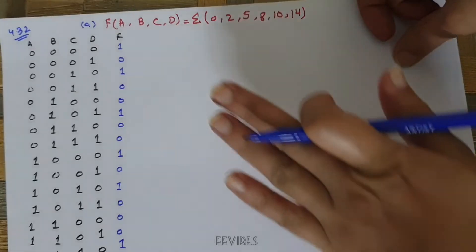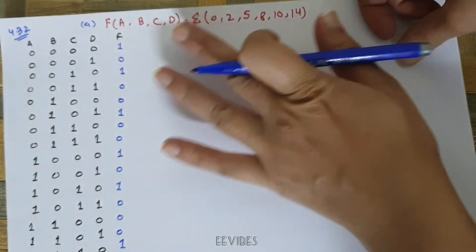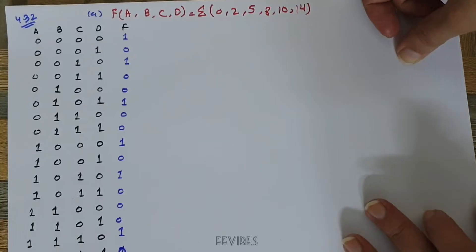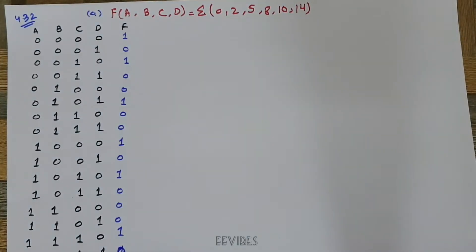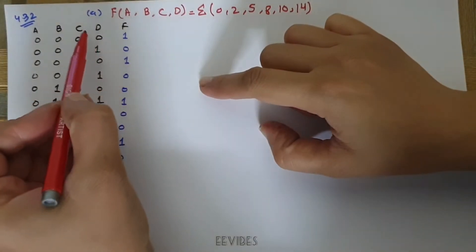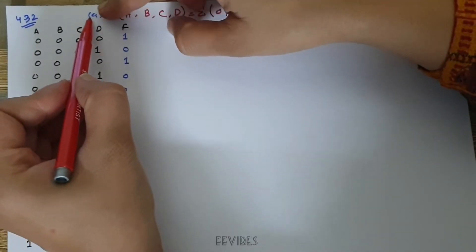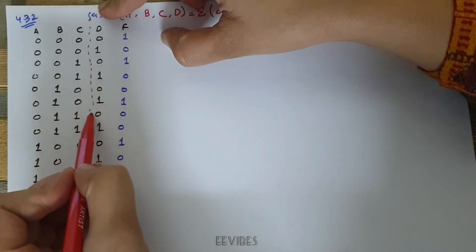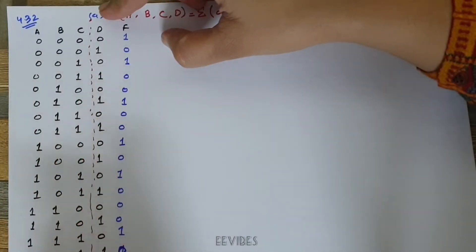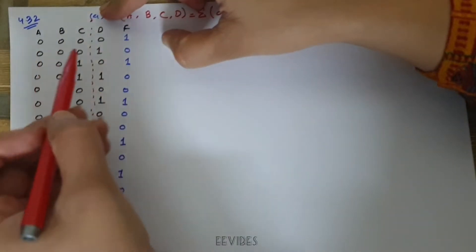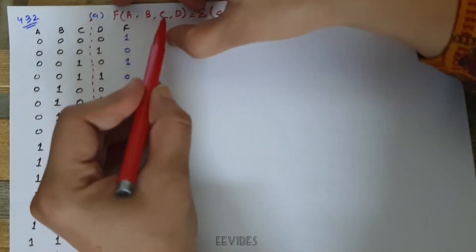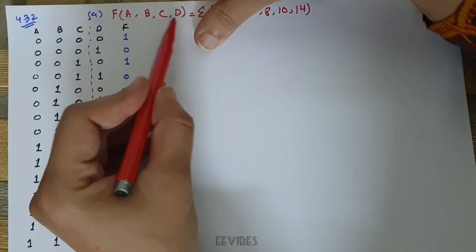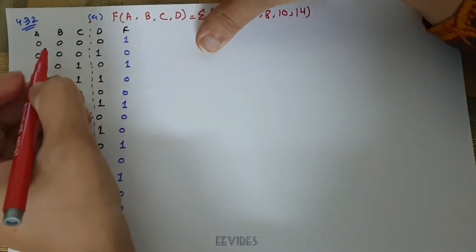In this way I have represented the function as its truth table. The next step is very important — pay close attention. We will leave the last variable, partitioning it from the rest of the variables. I have drawn a line separating it; in this case D is the last variable being used, and the rest of the variables are A, B, and C.